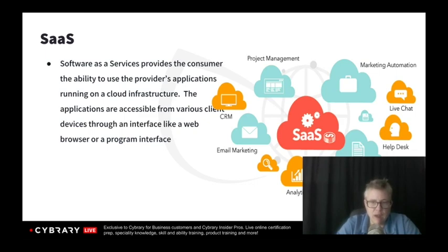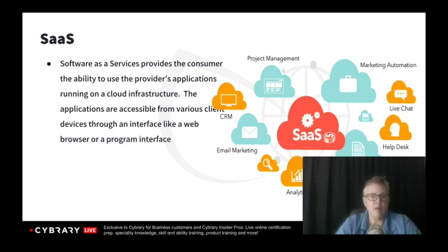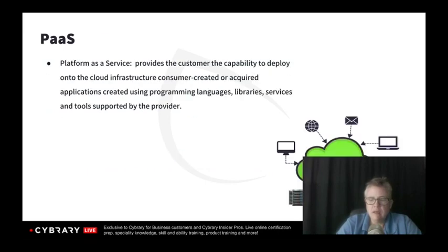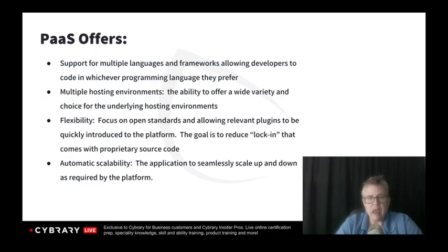Going back to software as a service — we still have our client systems and we're accessing the software through the internet, but we don't get the same degree of flexibility. With software as a service, we're getting whatever service our provider offers us. If we use Office 365, we get PowerPoint, Excel, Word — whatever is in the package. We don't get tons of options for customization; we get what we get. If we move down to platform as a service, we develop the applications ourselves, so we create the apps we want and have some flexibility there. When we go to infrastructure as a service, we have even more control.